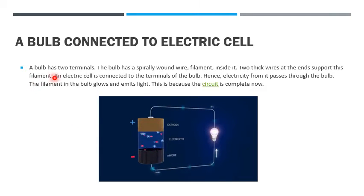A bulb has two terminals. The bulb has a spirally wound wire filament inside it. Two thick wires at the end support this filament. An electric cell is connected to the terminals of the bulb. Hence, electricity passes through the bulb and the filament in the bulb glows and emits light.